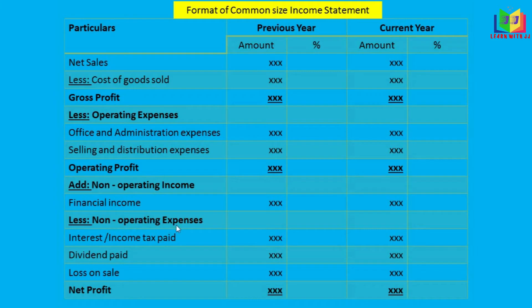Non-operating expenses are expenses that do not relate to the operation of the business, such as interest paid, dividend paid, and loss on sale. Financial income — or non-operating income — consists of items not affected by business operations, for example interest received, dividend received, and profit on sale.